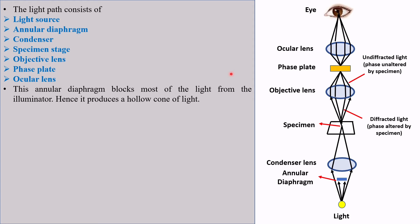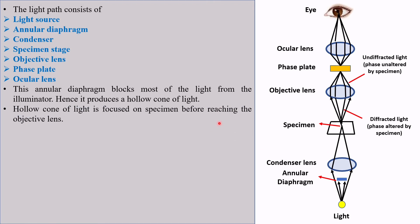The annular diaphragm blocks most of the light from the illuminator, as an opaque disc does in a dark field microscope. Hence, it produces a hollow cone of light, which is focused on the specimen before reaching the objective lens.